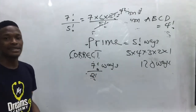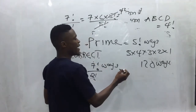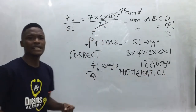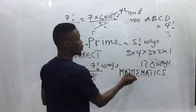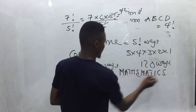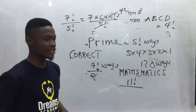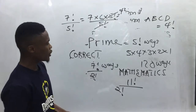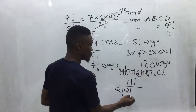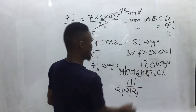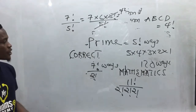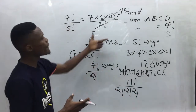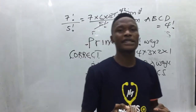For the word MATHEMATICS: count the letters — eleven total, giving eleven factorial. Now check repetitions: M appears twice, A appears twice, T appears twice. No other repetitions. So the answer is eleven factorial over two factorial times two factorial times two factorial.